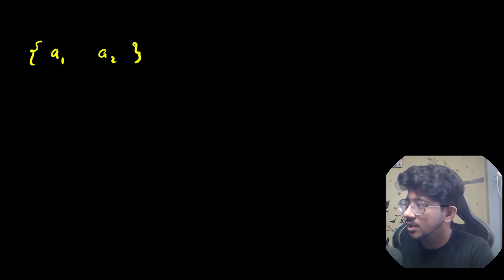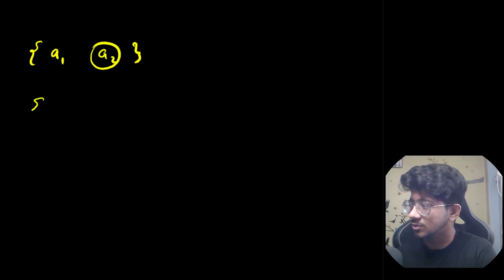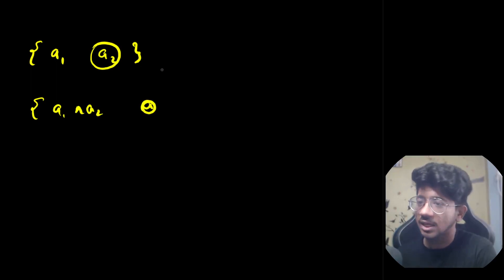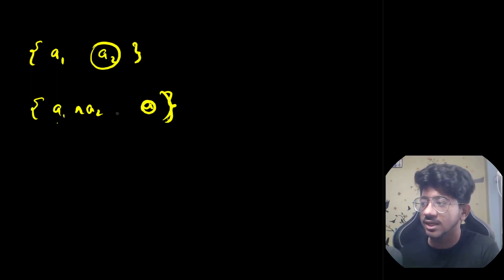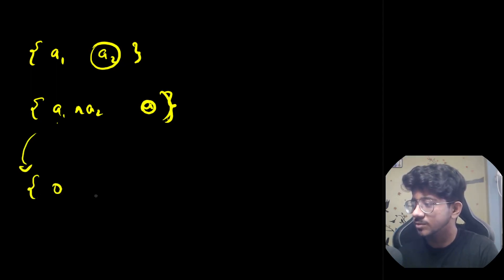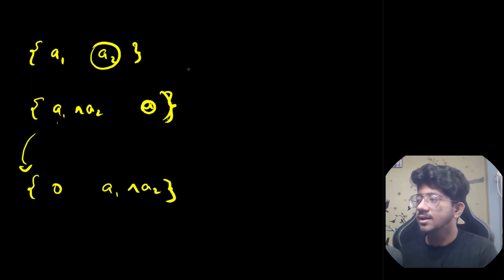There is this operation: you pick any element and XOR everything with that. Let's say you have an array A1, A2. If we pick A2 and XOR the whole array with it, the array becomes {A1 XOR A2, 0}, because A2 XOR A2 becomes 0. Now if you pick 0, the array remains the same. If you pick the remaining non-zero element and XOR again, you essentially get {0, A1 XOR A2} — nothing changes.